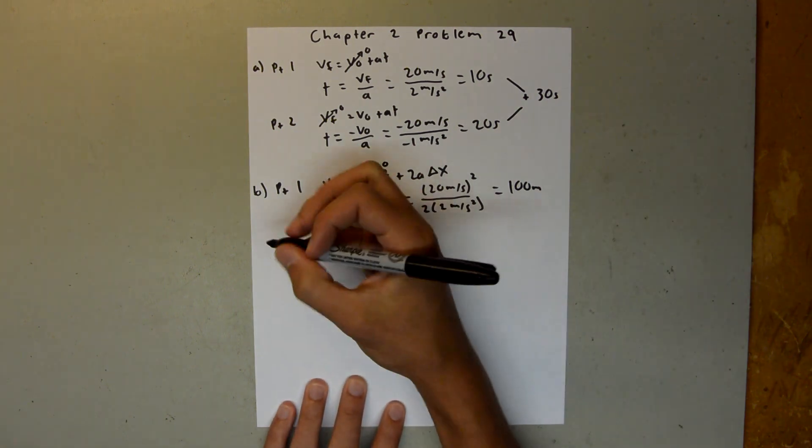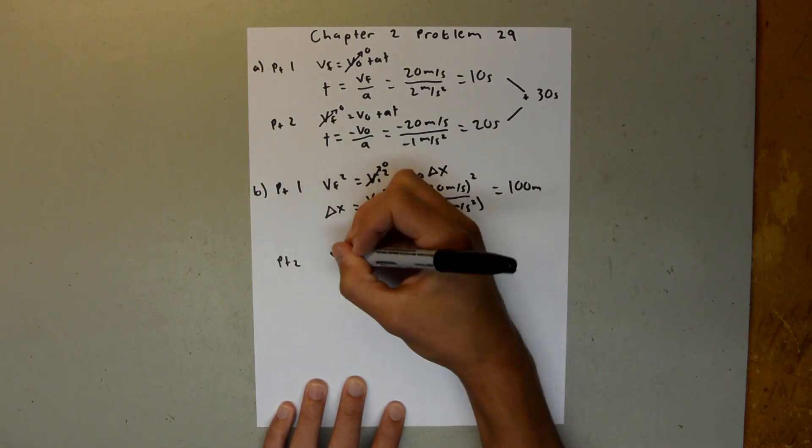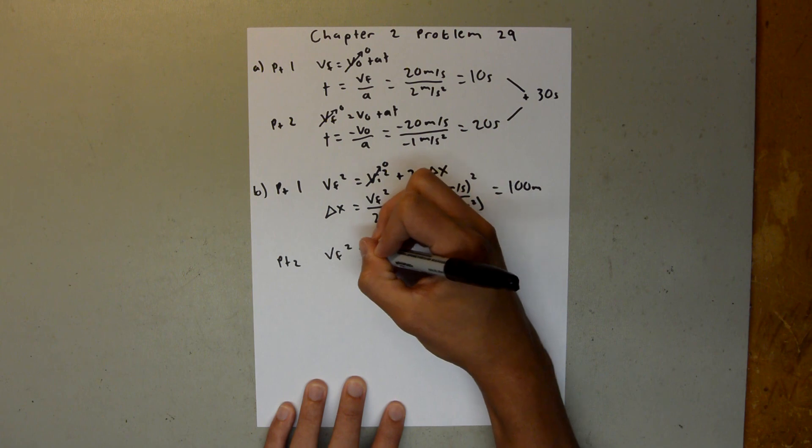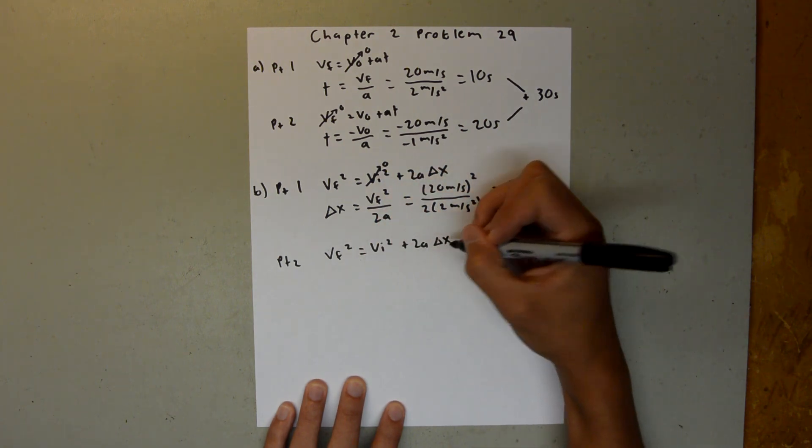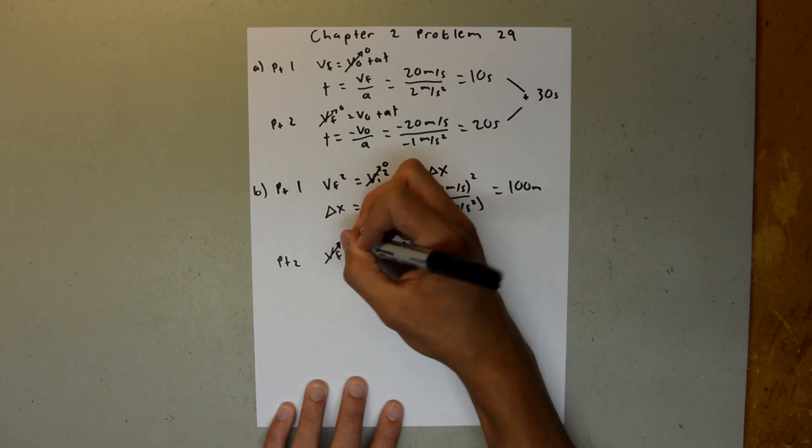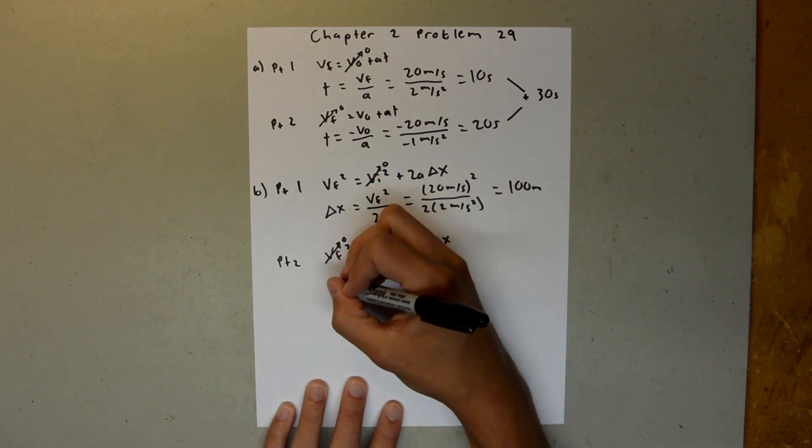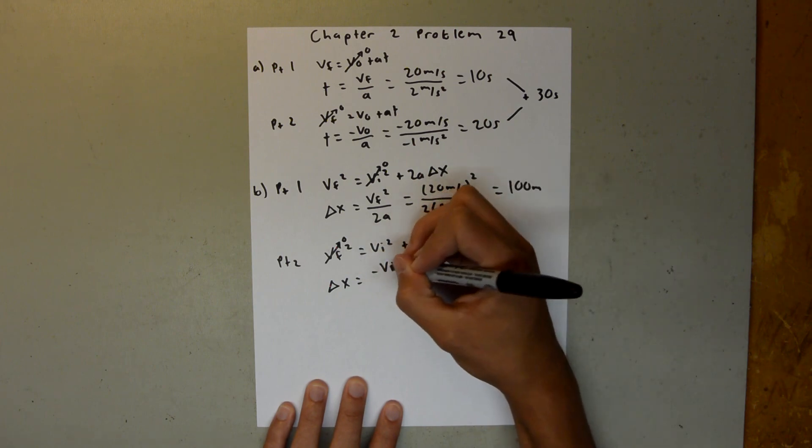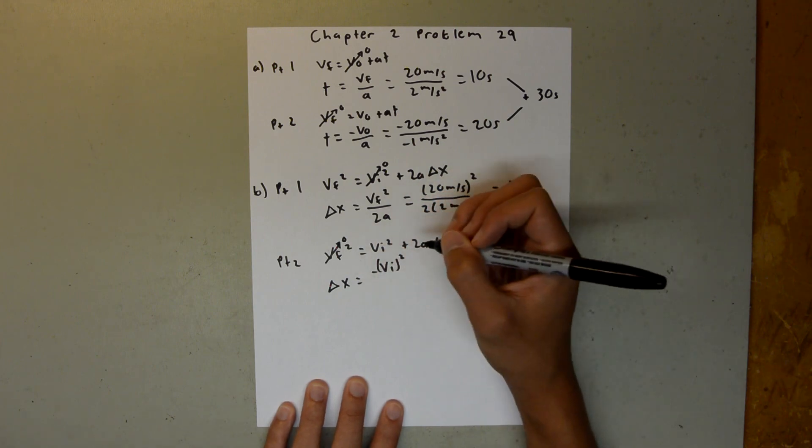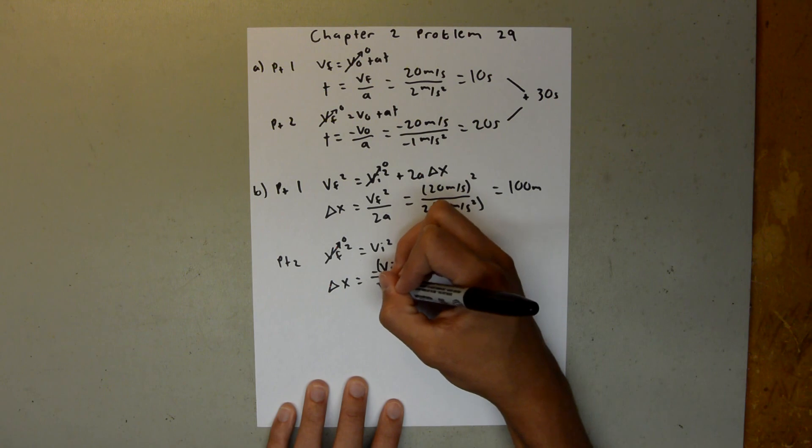And now we can do the same thing for Part 2, same equation, and the only difference for this now is our final velocity is 0, so then we get delta X is equal to negative V initial squared over 2A.